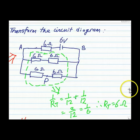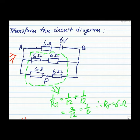From here, you can calculate the total resistance using the formula given, and the total resistance for these two sets of parallel resistors works out to be 6 ohms.